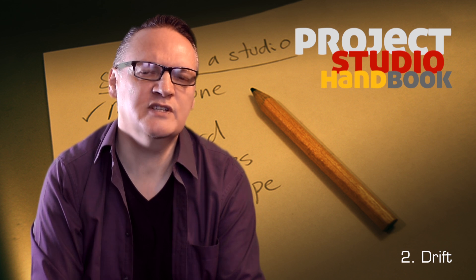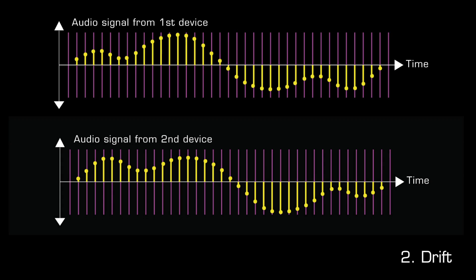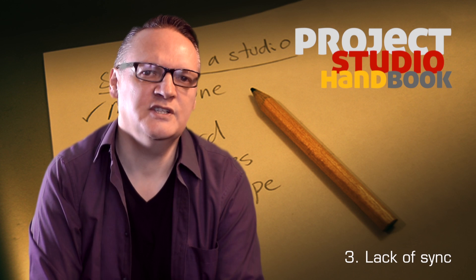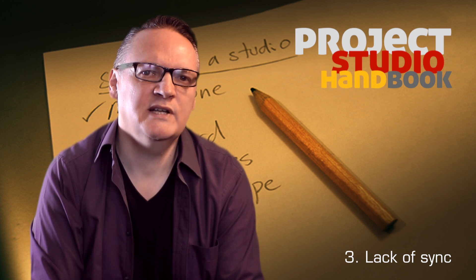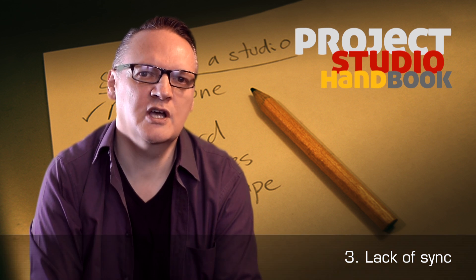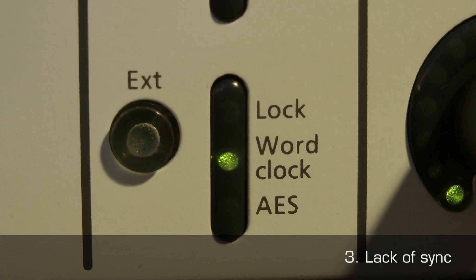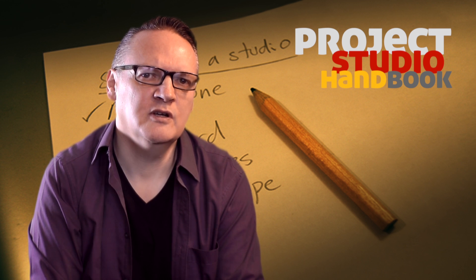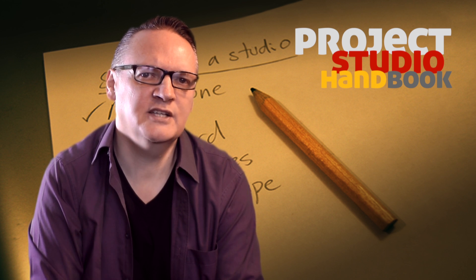Drift is caused by serious transmission problems in a lead, or the clocks of two devices running out of sync with each other. This can happen if the devices are not adequately synchronised or one clock is operating less precisely than another. In this situation, devices in a network are operating independently according to their own clocks and are not properly synchronised. Clicks, pops and dropouts in the audio signals exchanged between them are inevitable. The same symptoms occur when the sample rates of connected devices differ.